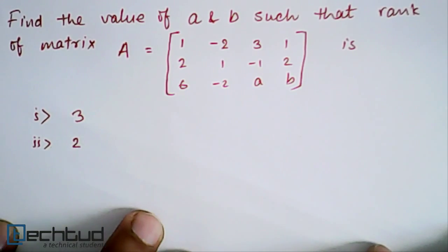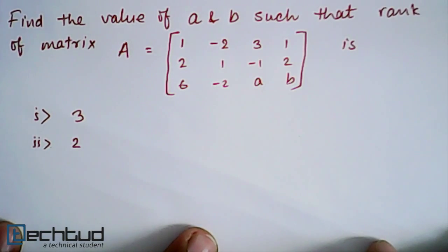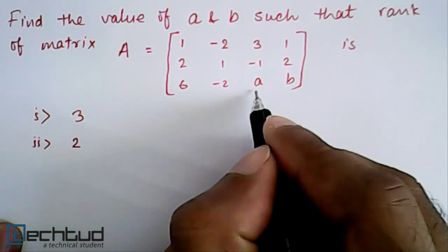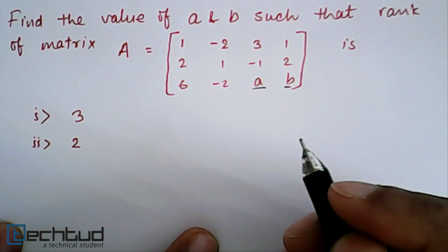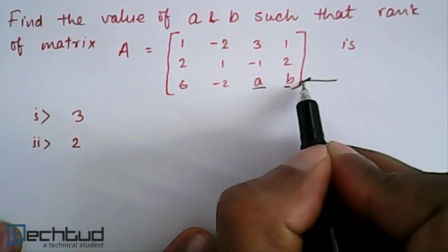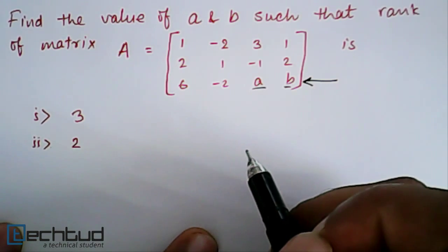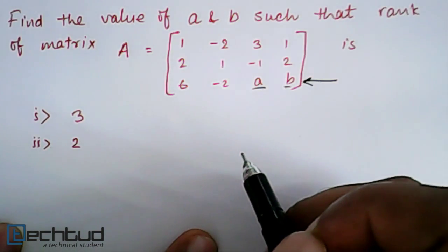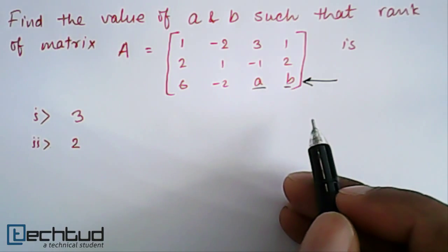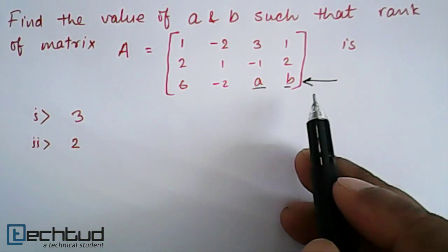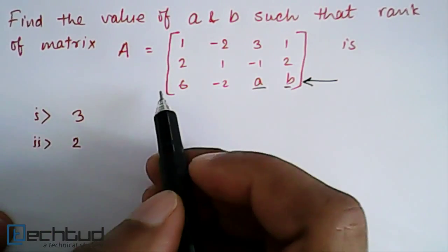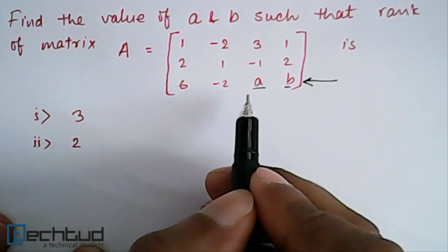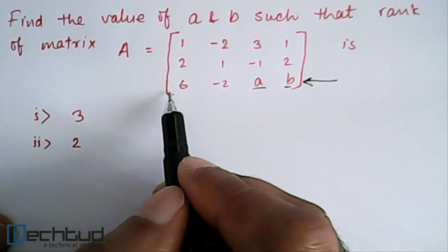How we will approach this problem is most important. The problem here is to find out the value of a and b. Our approach should be to make this row zero. We will just apply a simple elementary transformation that we will subtract R3.